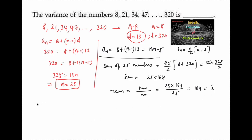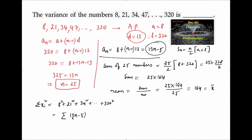To calculate the variance we need Σxᵢ². That is 8² + 21² + 34² + ... + 320². Since the nth term is 13n − 5, this is Σ(13n − 5)², which expands to 169n² − 130n + 25.